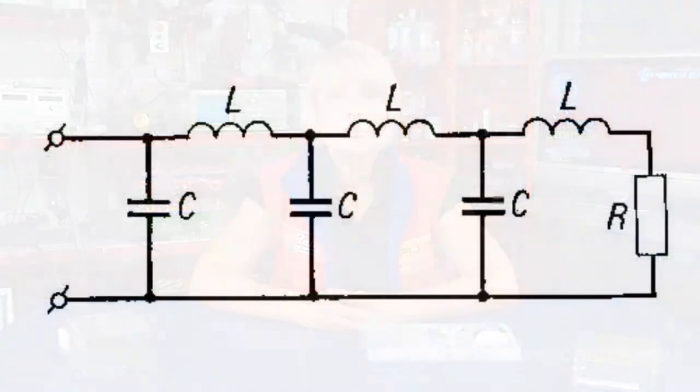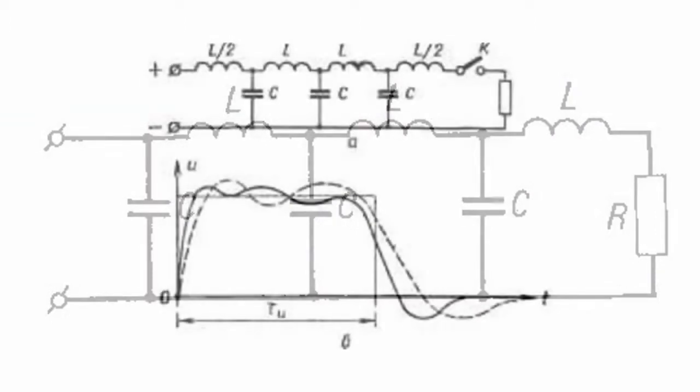An artificial delay line consists of a certain sequence of branches that simulate a real line. Such branches can be represented by LC networks that comprise capacitor-inductance components.